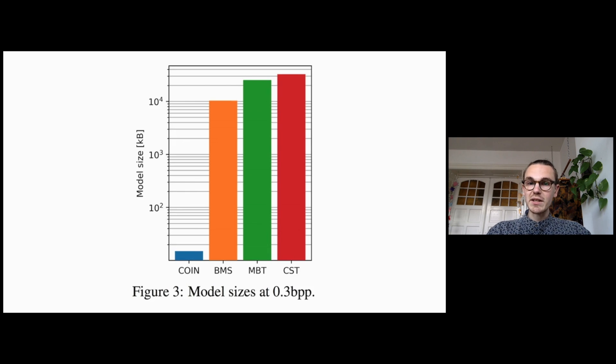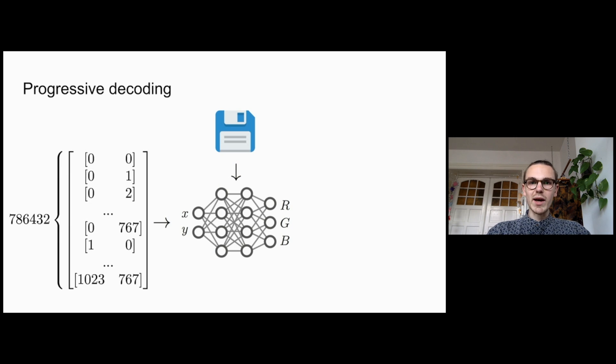On the bright side, our method has a few advantages that make it particularly suitable for deployment on edge devices. Firstly, since we are communicating the image as the weights of the neural network, we strive to make the model itself as small as possible. In comparison to other learned compression methods, COIN results in model sizes orders of magnitude smaller, which allows it to be used even on the most severely memory-limited devices.